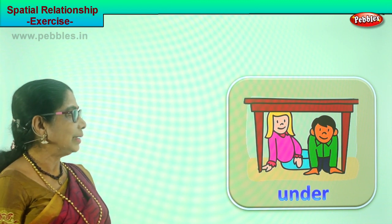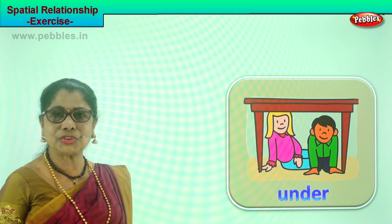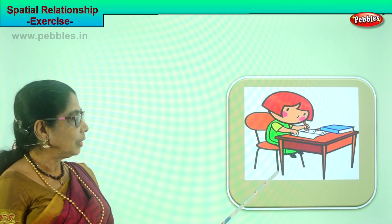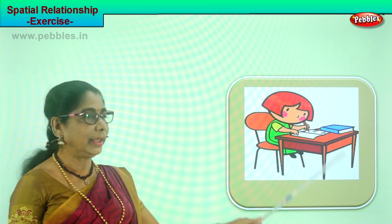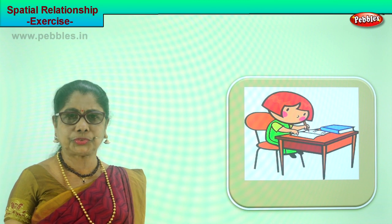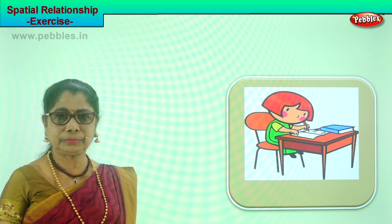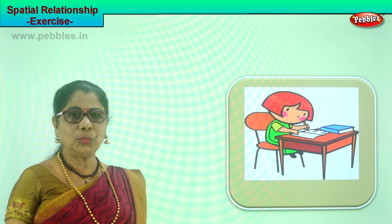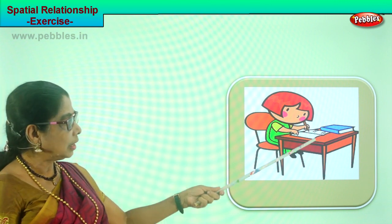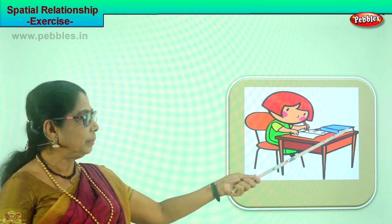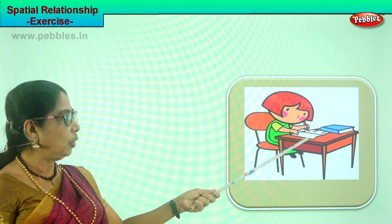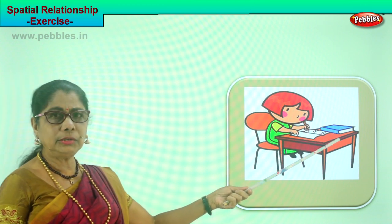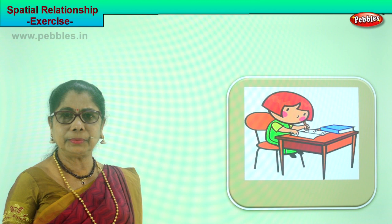Let's look at another picture. What is the little child doing? Where are the books? She is writing. The books are on the table, and she is doing her homework, placing the books on the table.